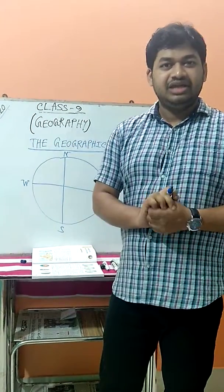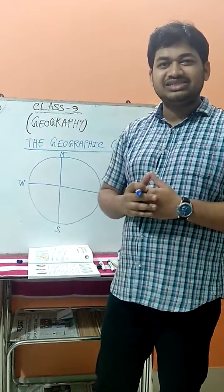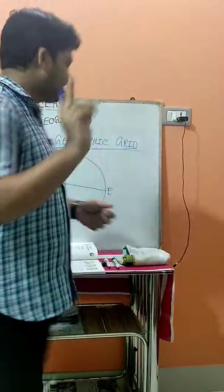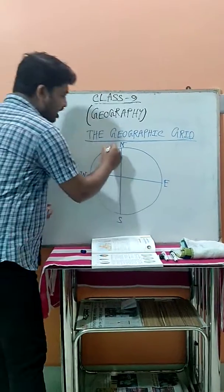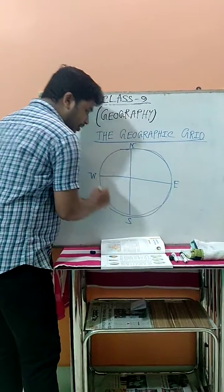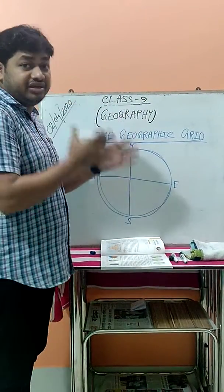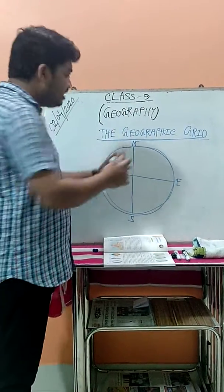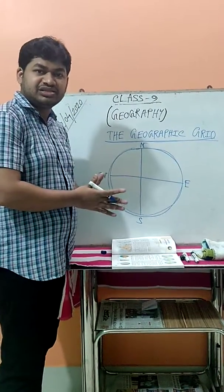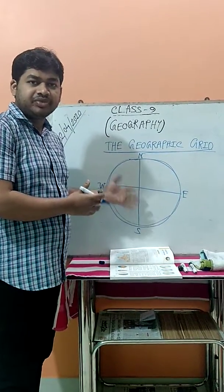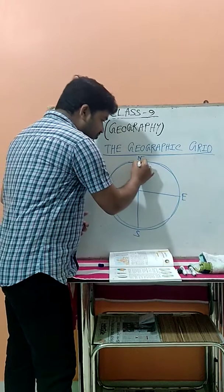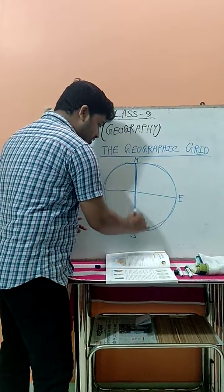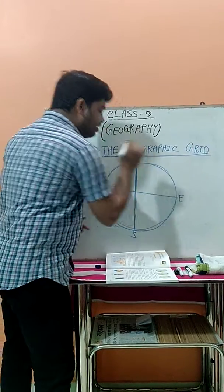As you read in class 5-6, we discussed what is the geographical grid. Now today again I will cover it once more. In the last chapter we read about the Earth. The Earth is spherical in shape — that is called the spherical shape.